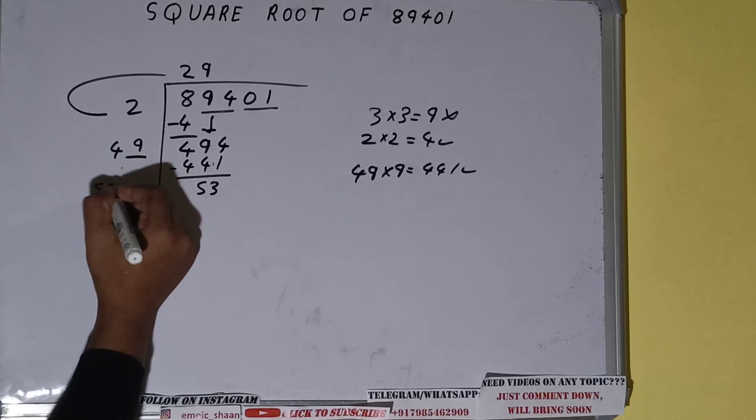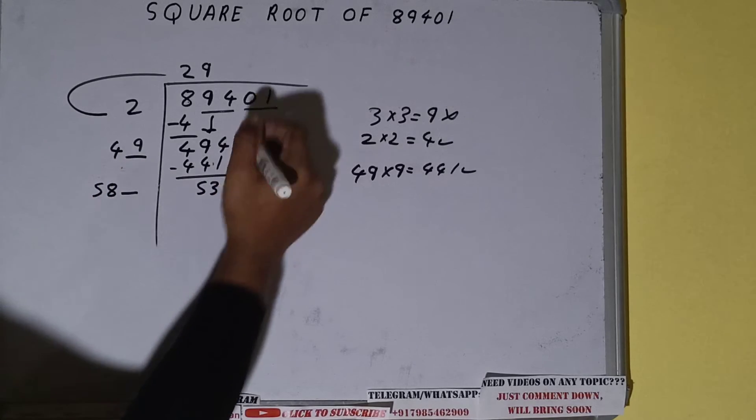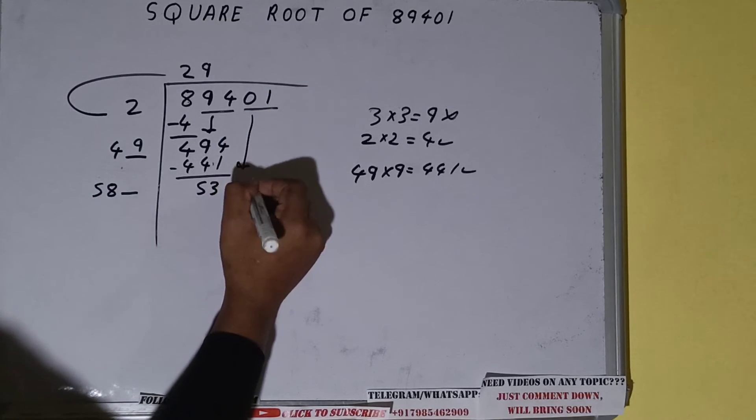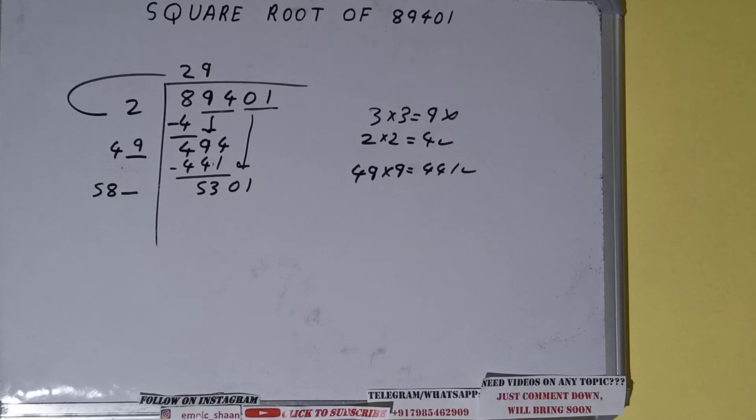Write it here and keep a digit extra, and this number we need to make it big. So bring the next pair down and it will become 5301. Now compare this 58 with this 530.